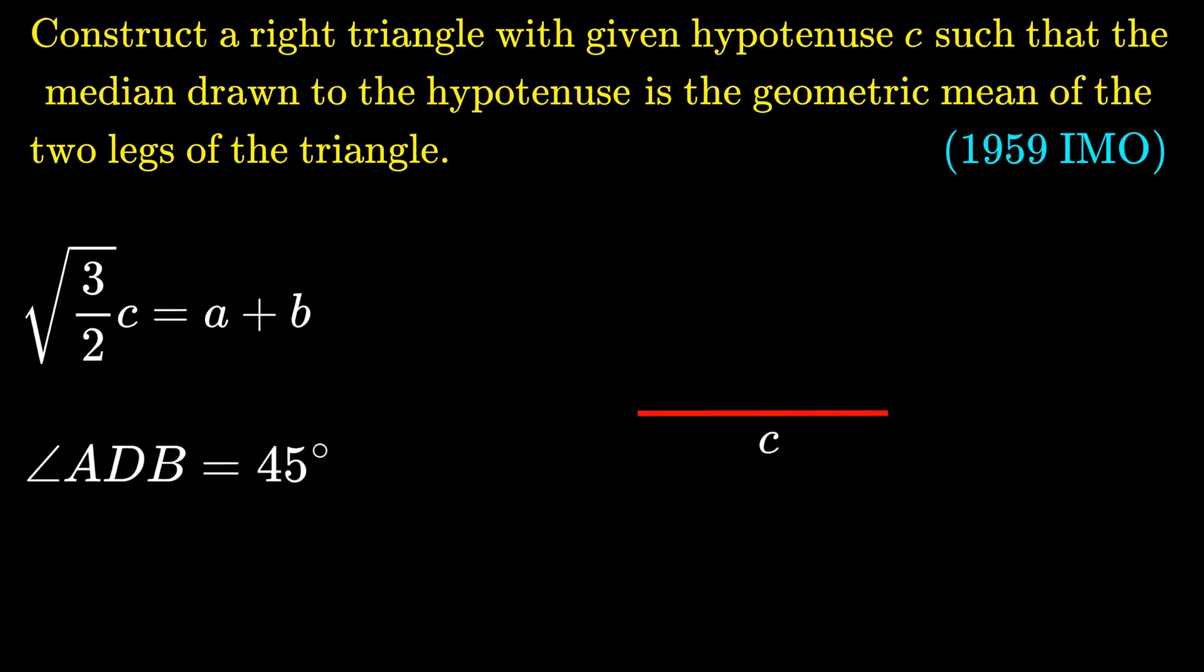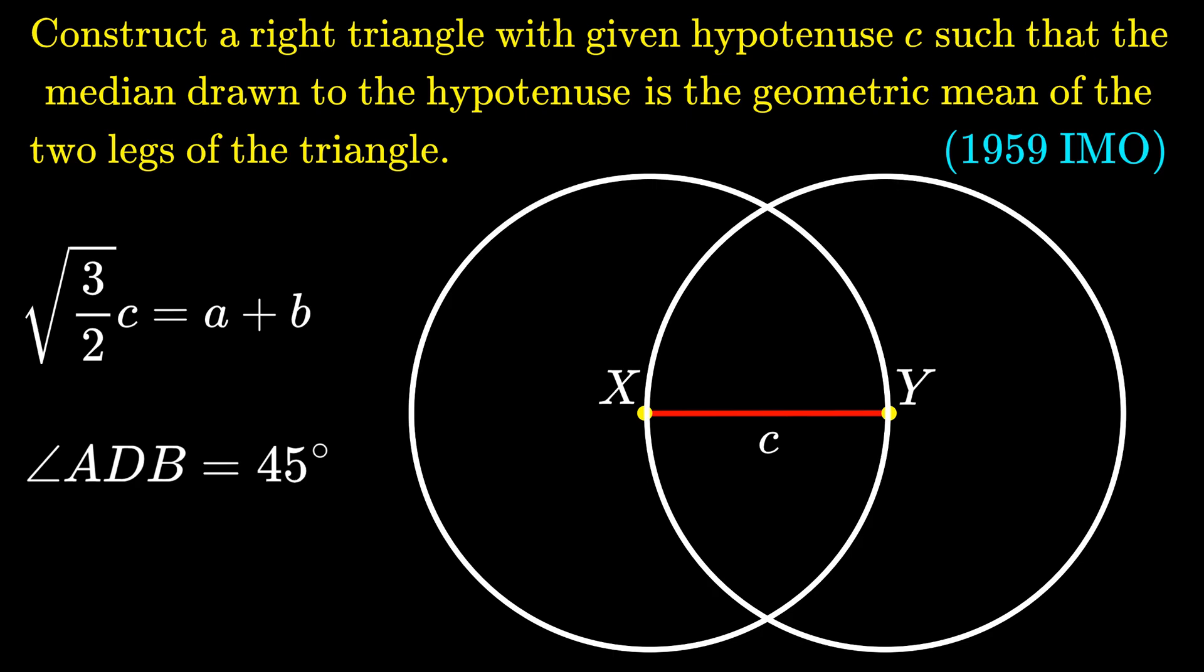From the given hypotenuse C, we can construct a length √(3/2) · C as follows. We first draw a segment XY with length C and two circles with radius C centered at X and Y respectively. If we label one of the intersections of the two circles as Z, we see that triangle XYZ is an equilateral triangle with side length C.